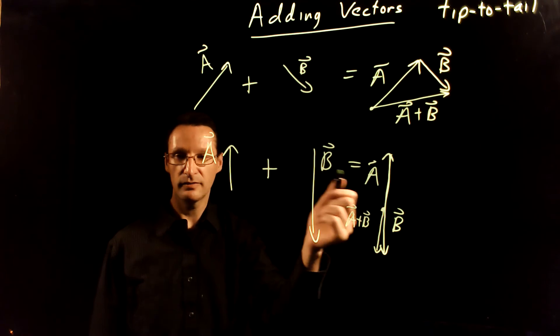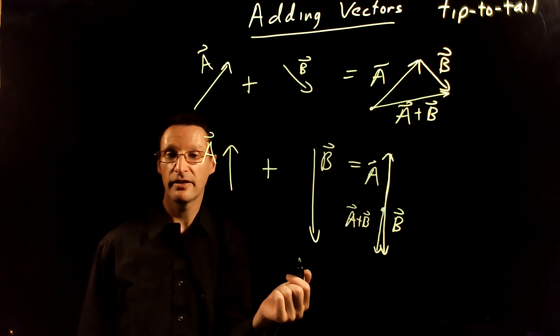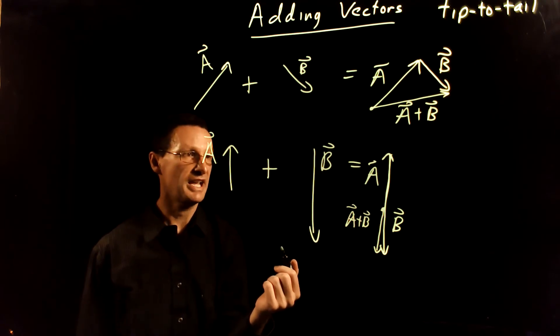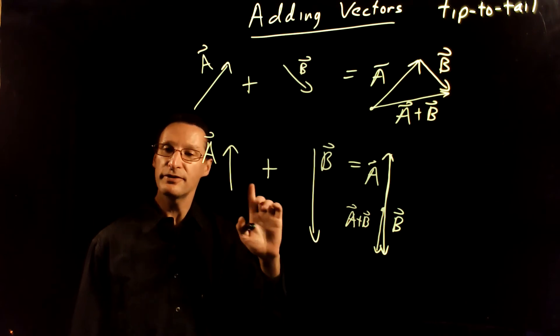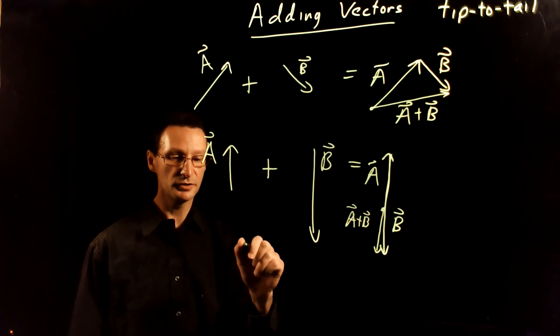So when they're parallel or anti-parallel, they function pretty much like numbers where you just add them and subtract them. There's a few other operations you can do with vectors.